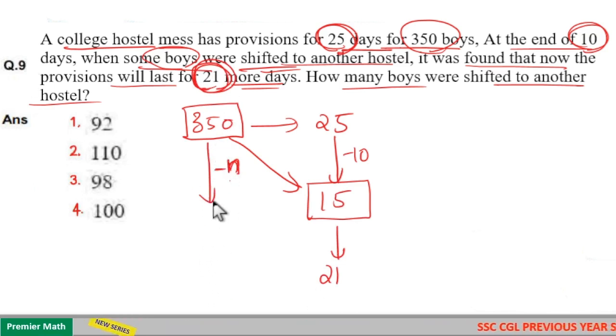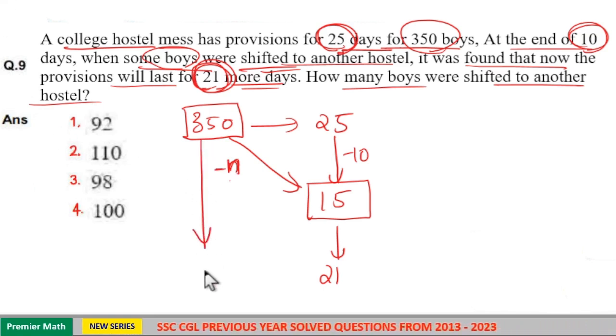I will take it as x number of boys. That is, for x number of boys, food will now last for 21 days.